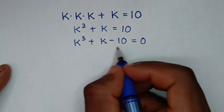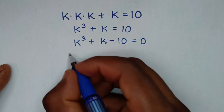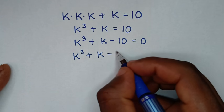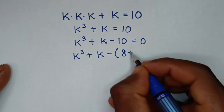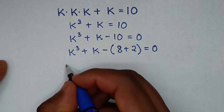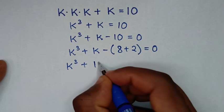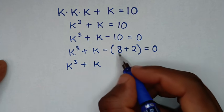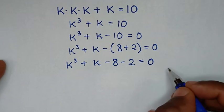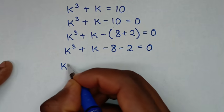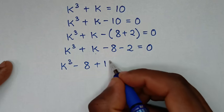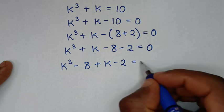Then we will split this 10 according to k power of 3 plus k. So minus 10 will split into minus 8 minus 2, giving us k power of 3 minus 8, then plus k minus 2, is equal to 0.